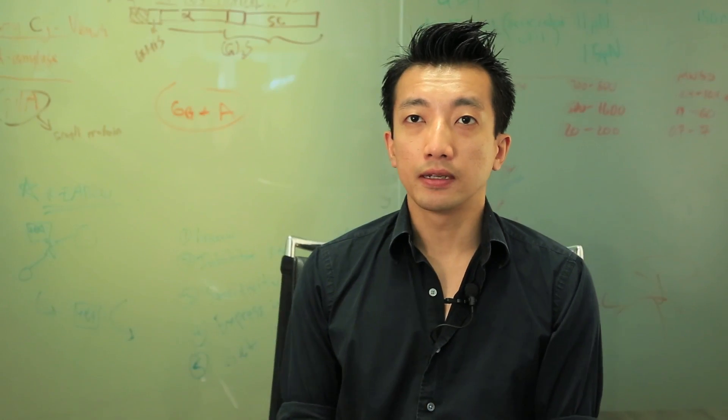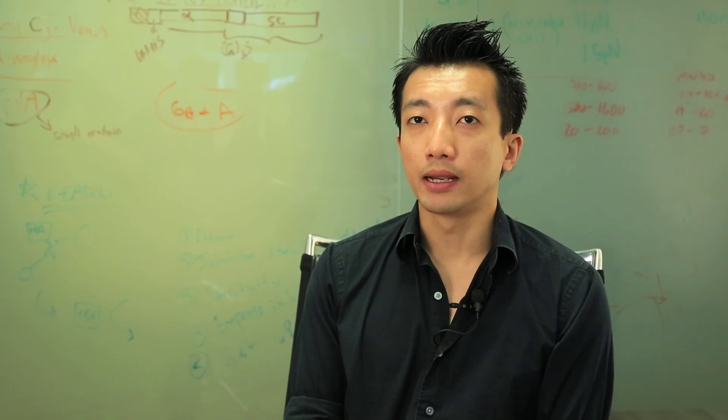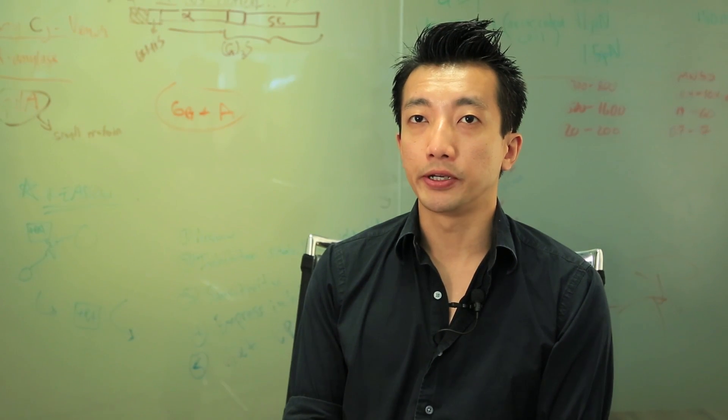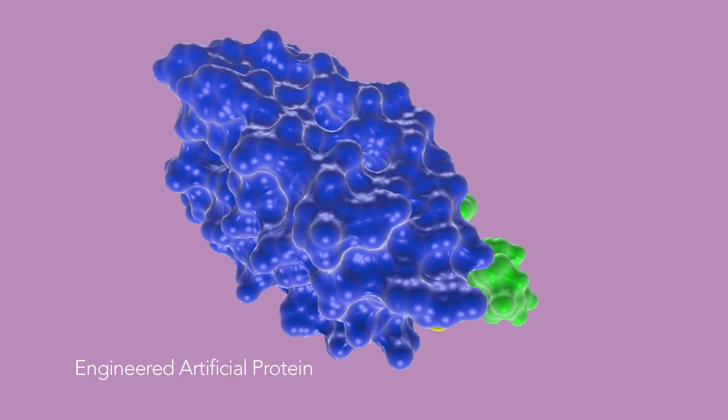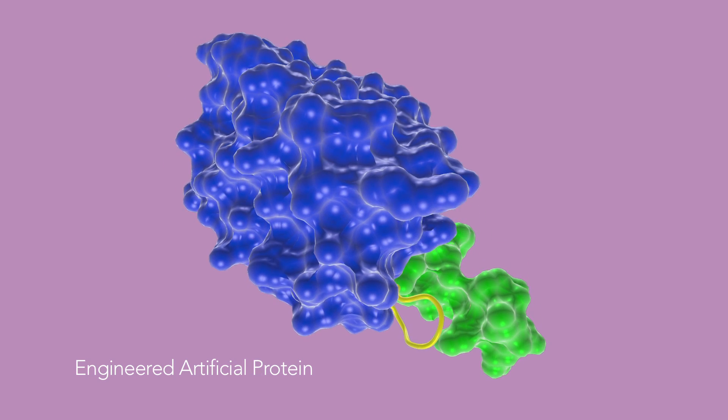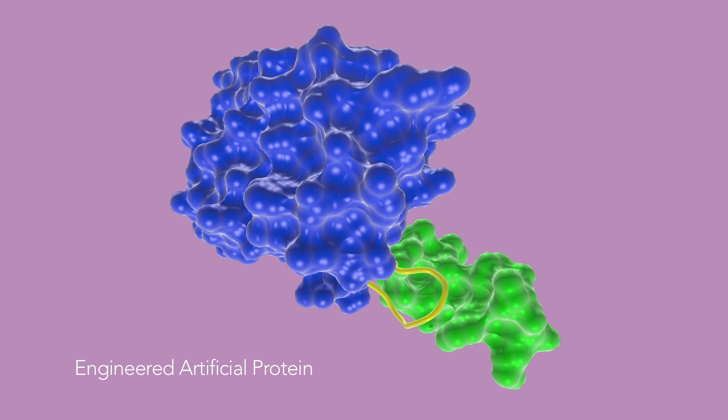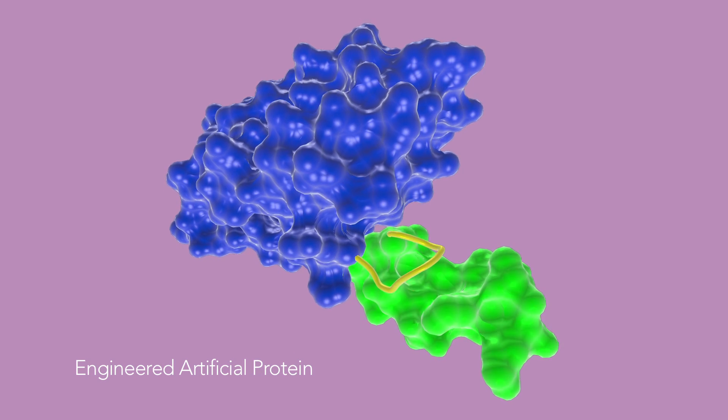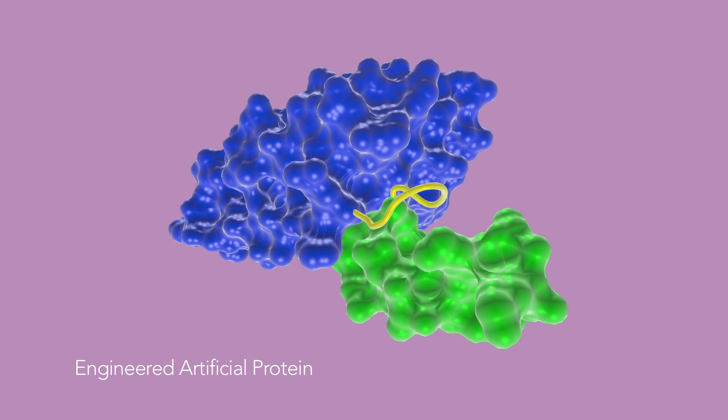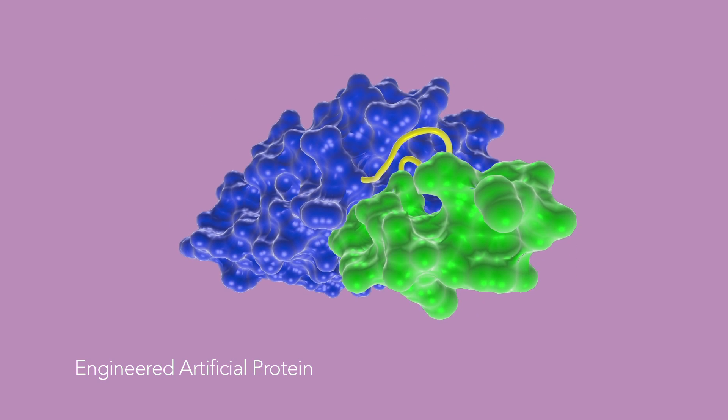The way it works is we genetically program the bacterium to produce artificial protein. This protein is a fusion protein composed of an amyloid domain fused to a functional peptide domain. And we can mix and match that peptide for whatever end function we want.